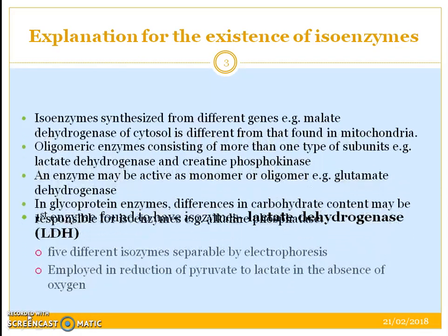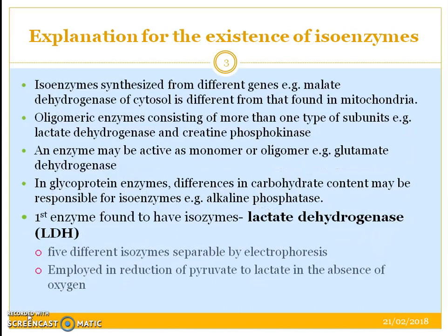So how did isoenzymes come about? There are four possibilities. Namely, they can be synthesized from different genes. For example, malate dehydrogenase is different in the cytosol as that in mitochondria. Secondly, they can have oligomeric properties, that is more than one type of subunits. For example, lactate dehydrogenase has got five subunits.